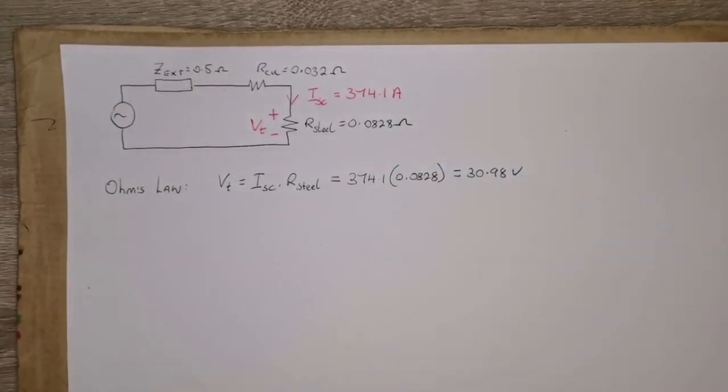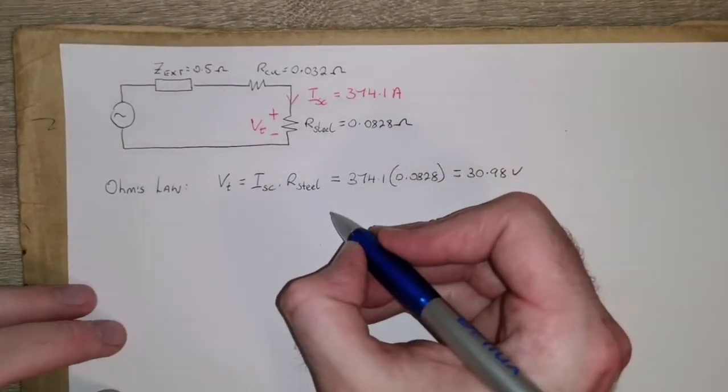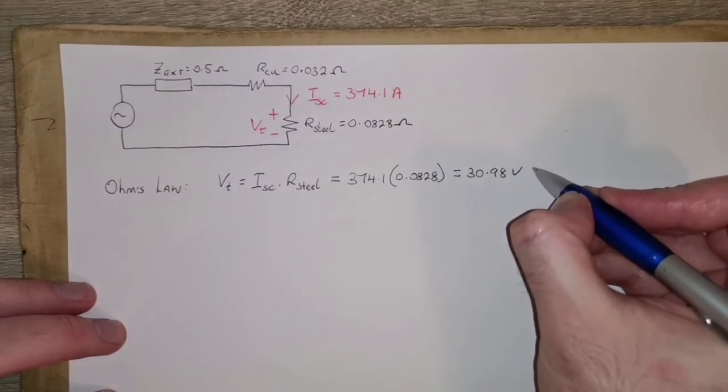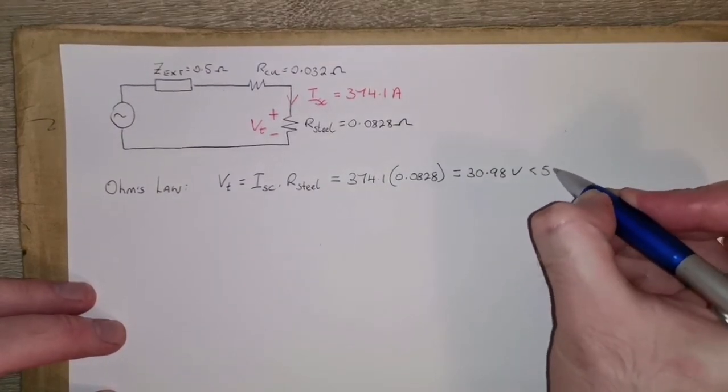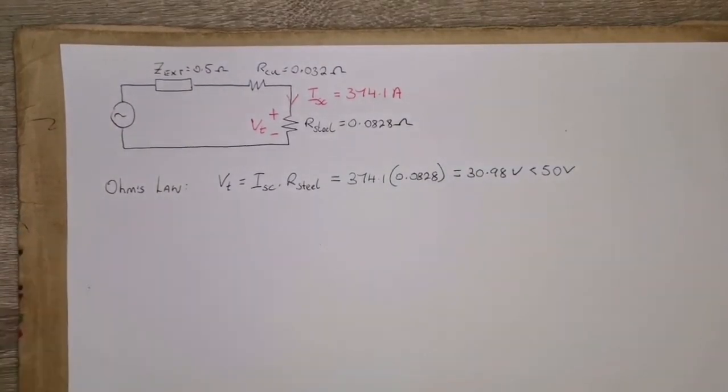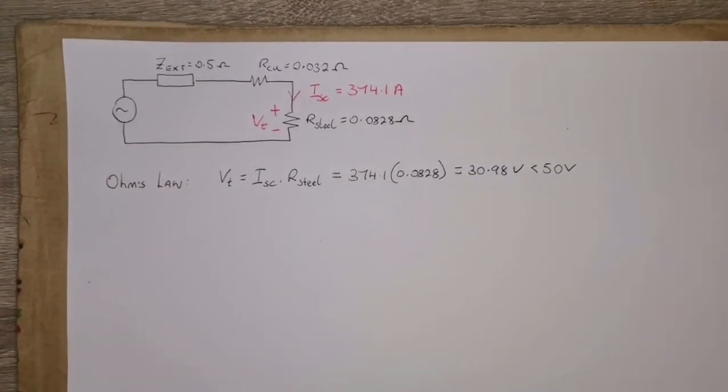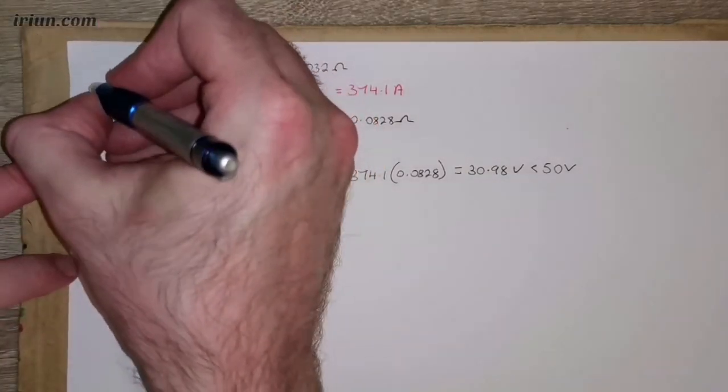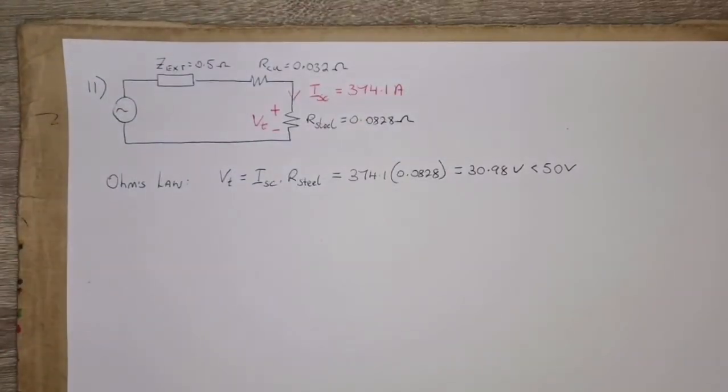And if you're reading the question, that's what it's looking for: 30.98 volts. And this is also below, so this is less than 50 volts, which is the permissible amount. So that is part two.